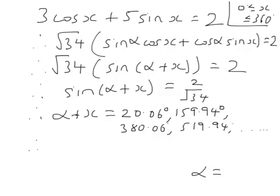So therefore x is these numbers here minus 30.96. 20 minus 30 isn't in that range, so I can ignore that one. So the first answer I'm going to get is 159.94 minus 30.96, which must be 128.98.